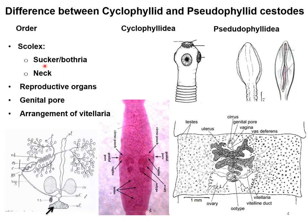The next differential point is the neck. In Cyclophyllidea parasites the neck is well developed and conspicuous, but in Pseudophyllidea parasites the neck is less developed or inconspicuous. Next we are going to talk about the reproductive organs in Cyclophyllidea and Pseudophyllidea.